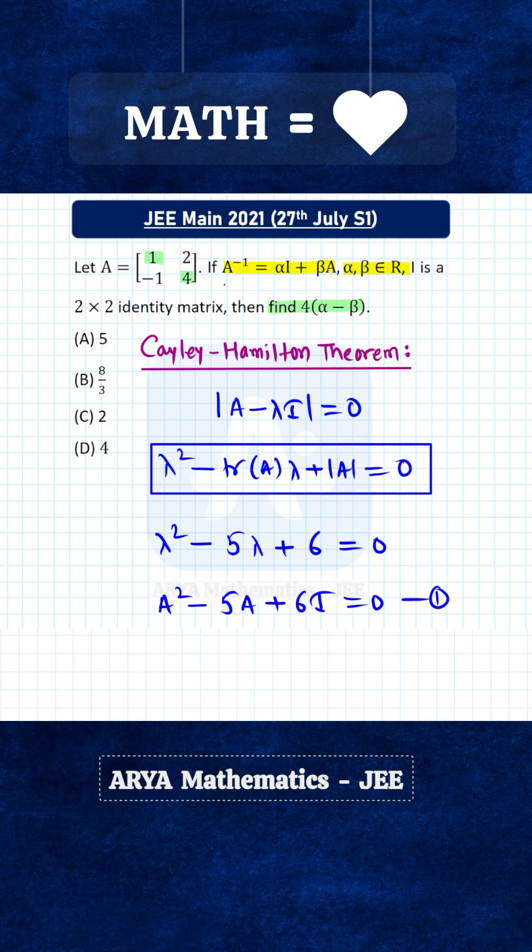The given equation is A⁻¹ = αI + βA. We will multiply both sides with matrix A so that we can get a polynomial equation in A.